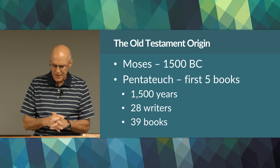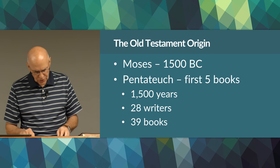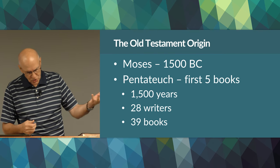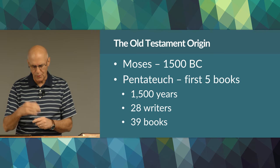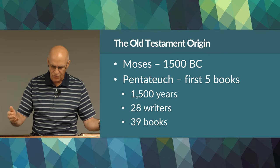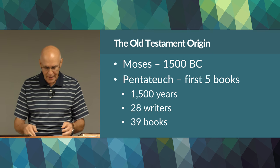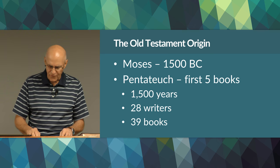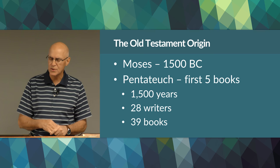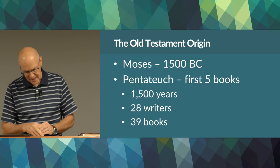Once God began using human beings to record His words, this system continued after Moses. Joshua was the next writer, as recorded in Joshua 24. Then the prophets recorded their history and prophecies after Joshua's time, as noted in Nehemiah chapter 8. Over a period of 1,500 years, approximately 28 writers completed the 39 books of the Old Testament. Malachi was the last to record in 516 BC.